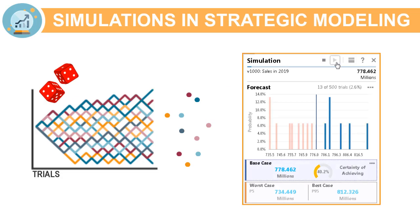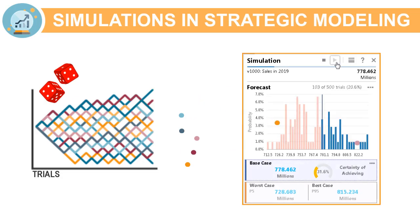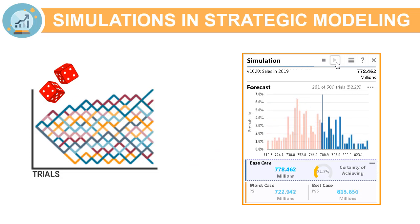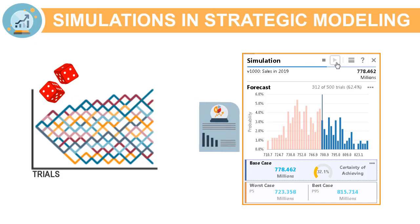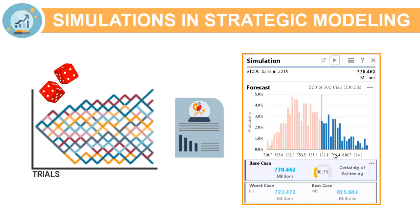During each trial of the simulation, random numbers are generated for each of the assumptions according to the range you defined. The model is recalculated and the output values are retrieved and added to the forecast charts. This process repeats until either the maximum number of trials is reached or until you stop the simulation.